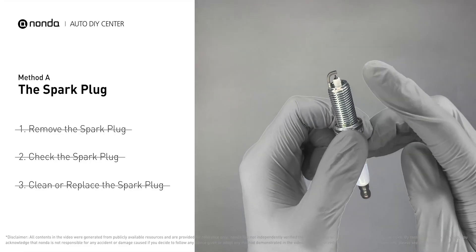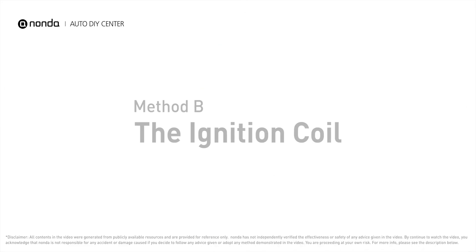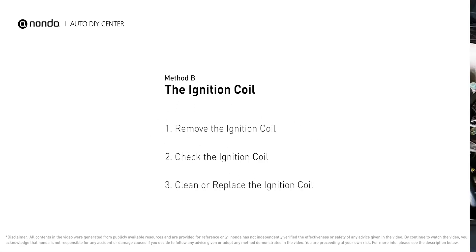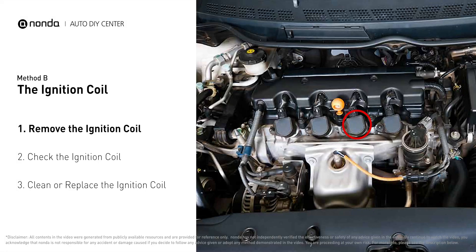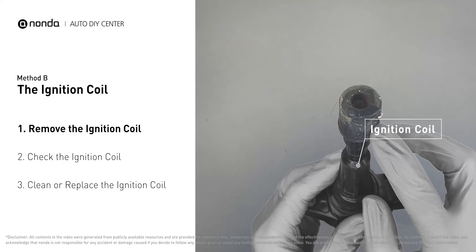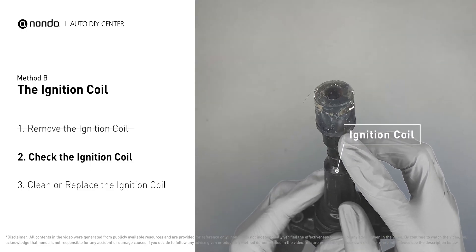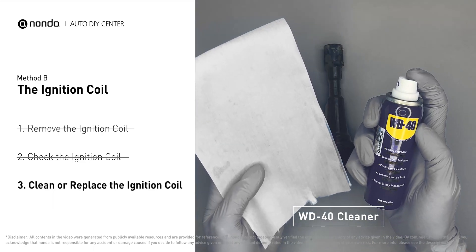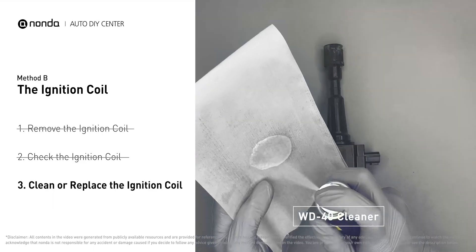Method B: the ignition coil. Ignition coils are usually installed directly at the cylinder head, above the spark plug. First, carefully remove the ignition coil from the engine. Check to see if the ignition coil is either stained or damaged. If the ignition coil is covered with engine oil or stains, simply clean it with a WD-40 cleaner.